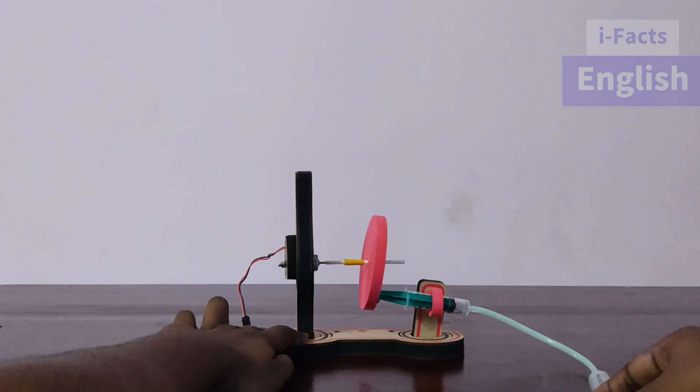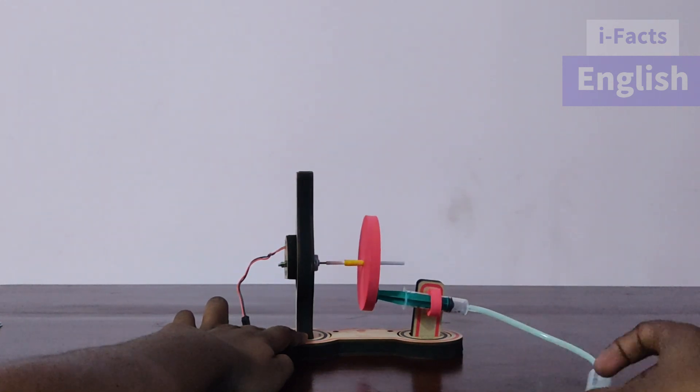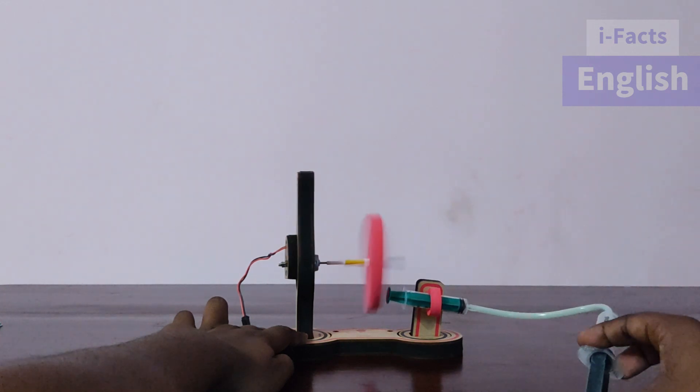Once we pass the liquid from one syringe to the other, the other syringe will expand and it will hit the wheel. So the wheel will stop rotating.